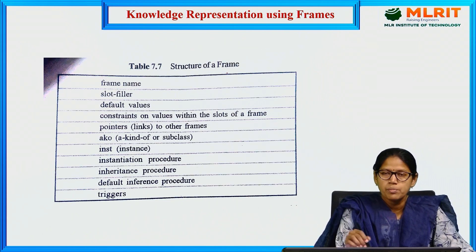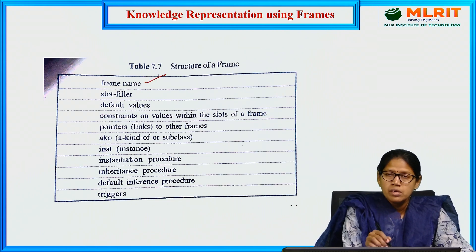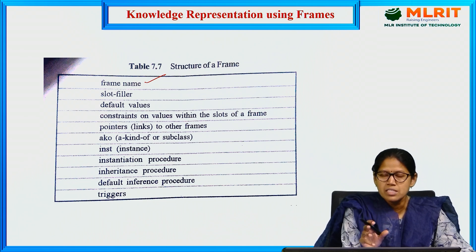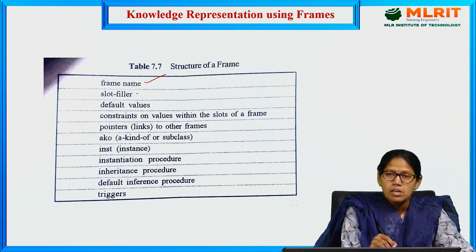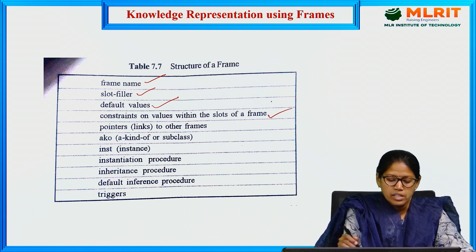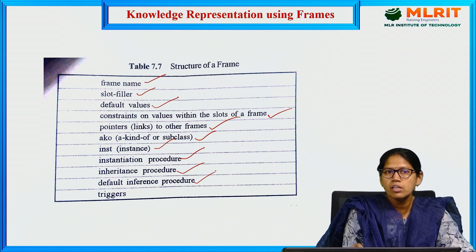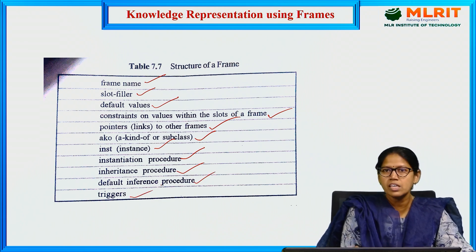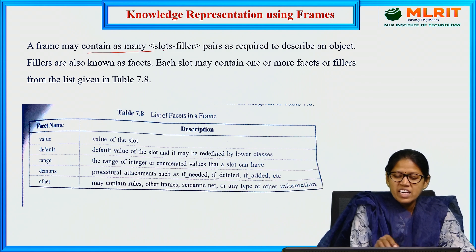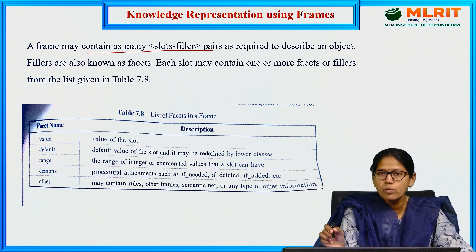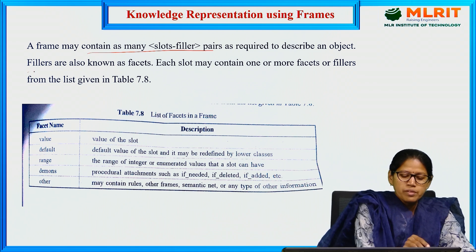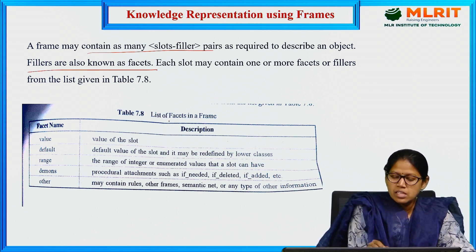Frames are basically machine-usable formalization of concepts or schemata. The structure of a frame contains: the frame name representing the concept, attribute and value slot-filler pairs, default values, constraints, conditions, links toward objects — echo or subclass, a kind of, and instance — instantiation procedure, inheritance procedure, default inference procedure, and triggers to check consistency. A frame may contain as many slot-filler pairs as required to describe an object. The fillers are also known as facets.